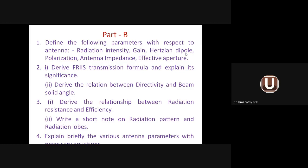Hertzian dipole means oscillating current element, and the six parameters available are radiation intensity, gain, Hertzian dipole, polarization, antenna impedance, and effective aperture. These six antenna parameters need to be explained one after another for a 16-mark question. The question may come with different antenna parameters.